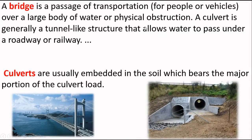A culvert is generally a tunnel-like structure that allows water to pass under a roadway or railway. Culverts are usually embedded in the soil, which bears the major portion of the culvert load.